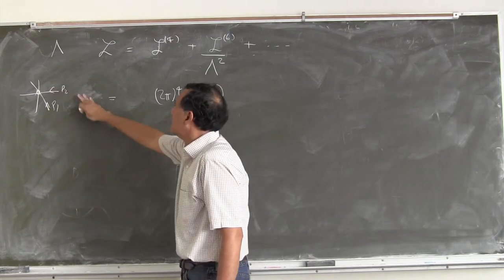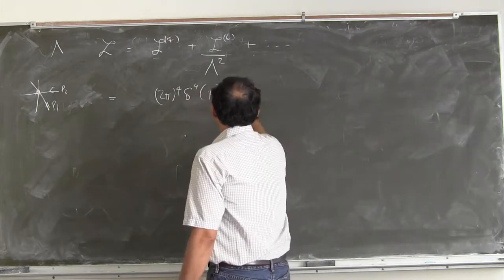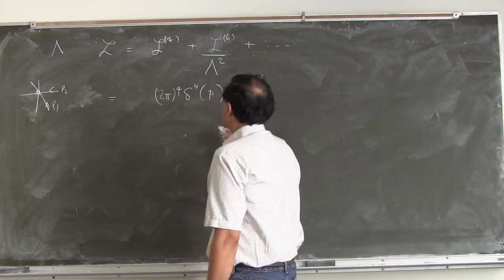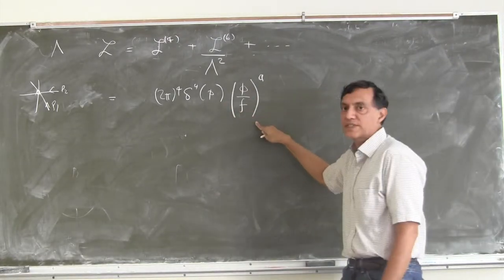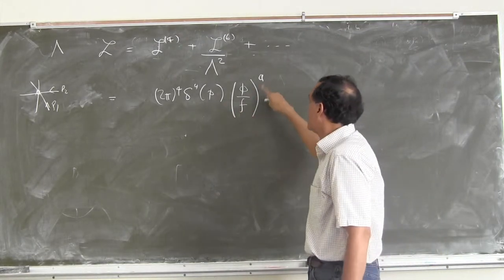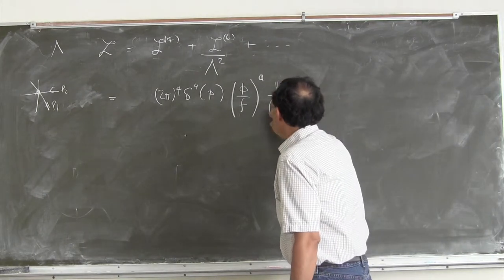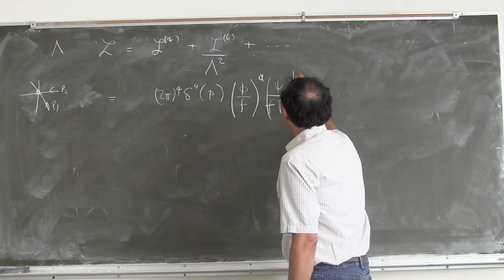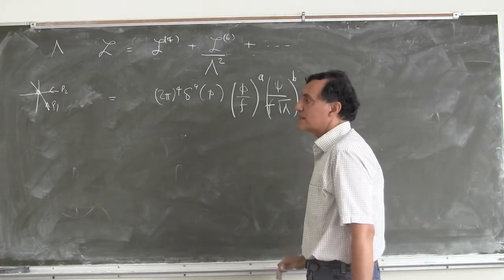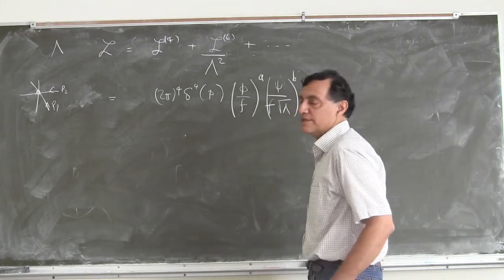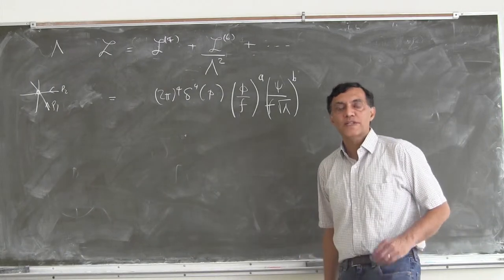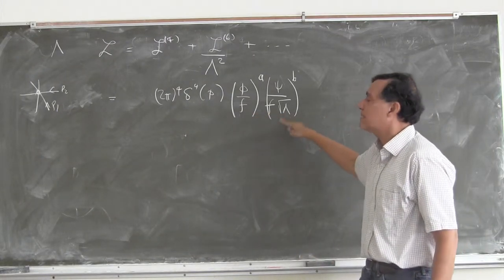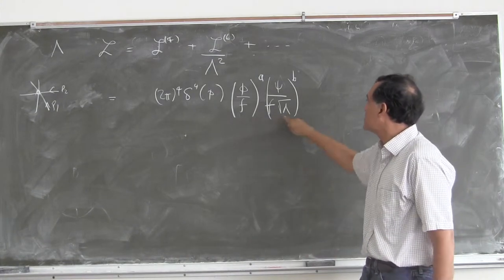For every scalar field — the scalar field has dimension 1 — the effective Lagrangian term has some scalar field over f to the power a. For the fermion fields I have f times sqrt(lambda) to the power b, where b is the number of fermion fields. So I'm doing a slightly more sophisticated version of the power counting with two scales, f and lambda, both of dimensions of mass.